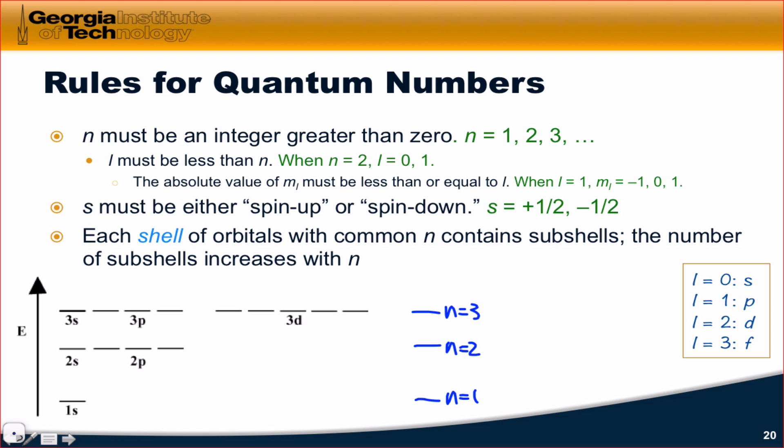we see that different subshells can correspond to the same principal quantum number, to the same energy level. For the n equals 1 level, well, the only possibility is l equals 0, s, right? And so the only possible energy level is 1s.